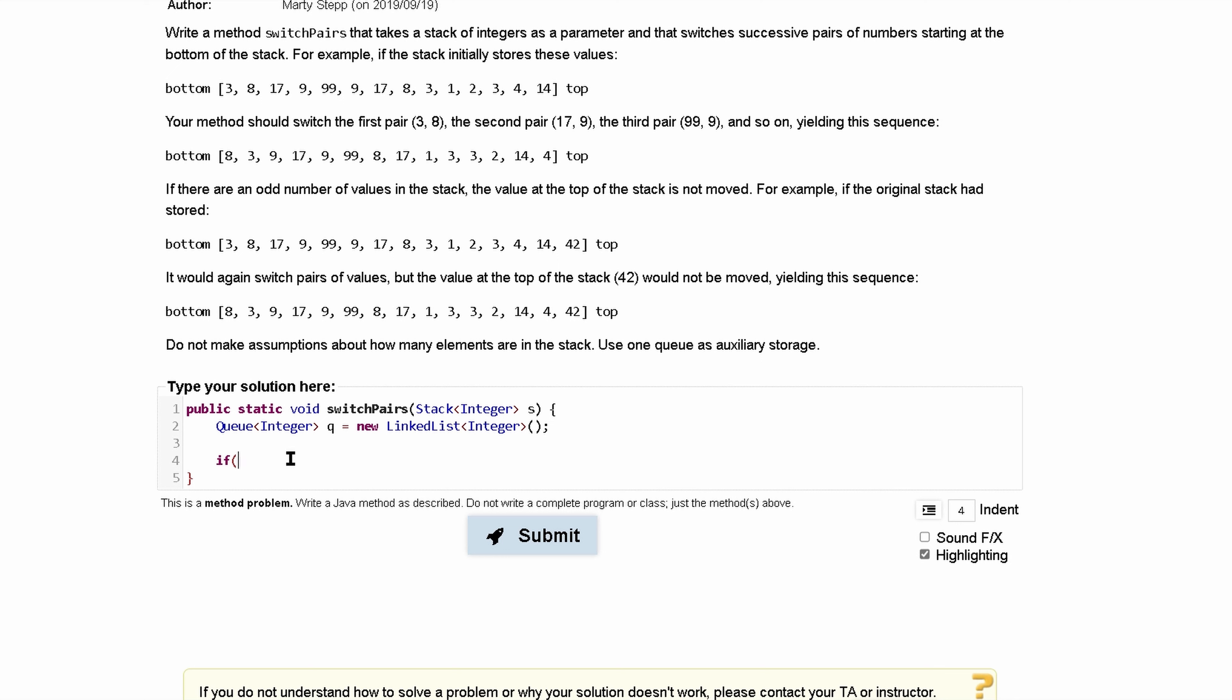So we'll say if our s.size, and we'll do modulus two, which means that if, or does not equal to zero. And this means that if we have a remainder, this means it's odd. We're going to do q.add. So we're going to add into our q and s.pop. We are going to remove this negative one from our stack.